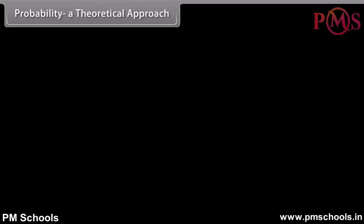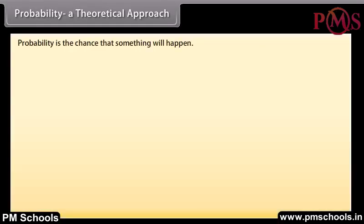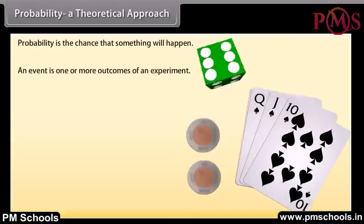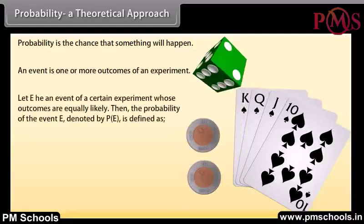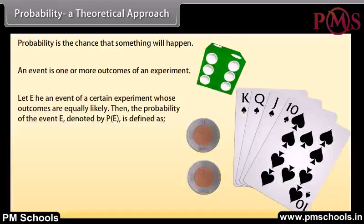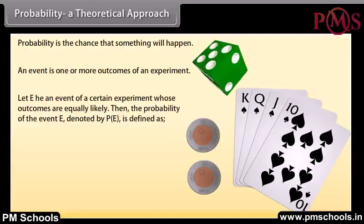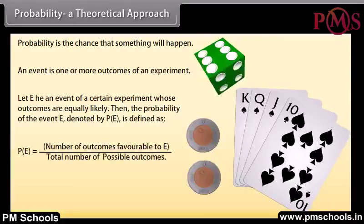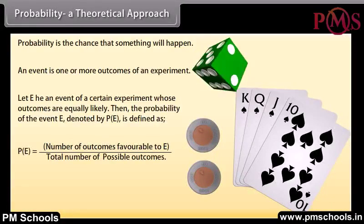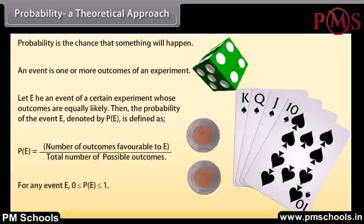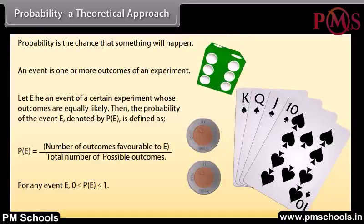Probability — a theoretical approach. Probability is the chance that something will happen. An event is one or more outcomes of an experiment. Let E be an event of a certain experiment whose outcomes are equally likely. Then the probability of event E is defined as: Probability of E = number of outcomes favorable to E divided by total number of possible outcomes. For any event E, 0 ≤ P(E) ≤ 1.